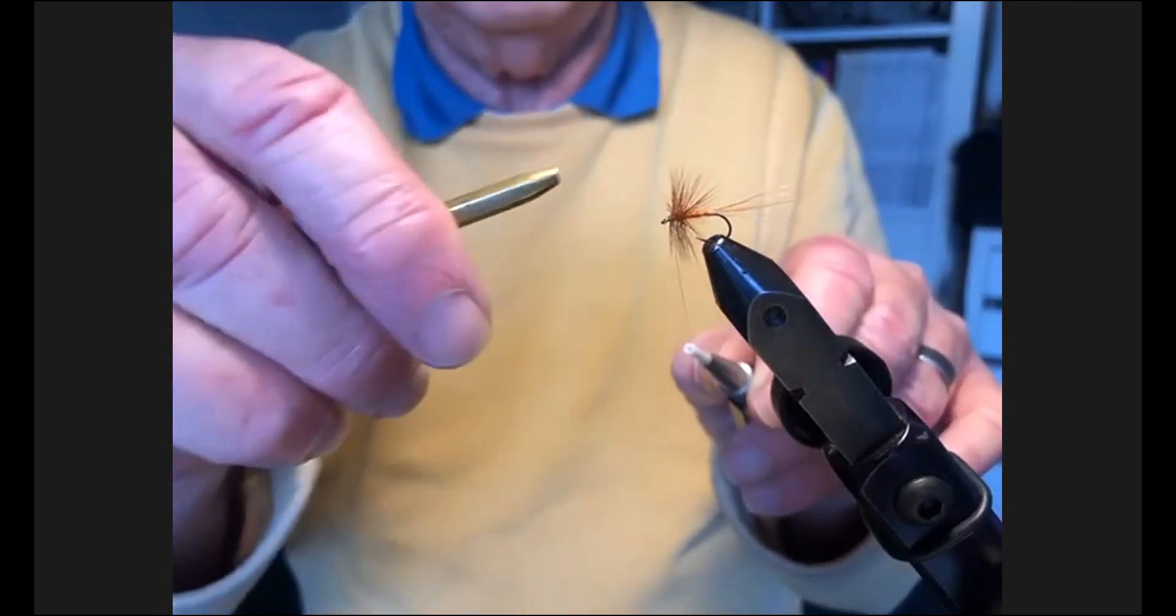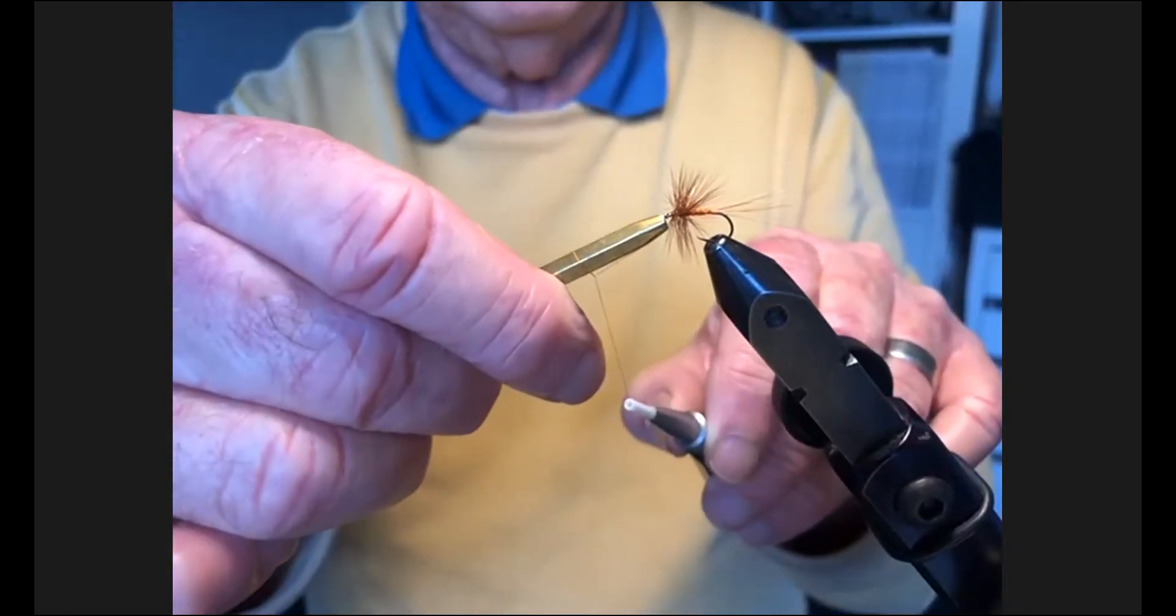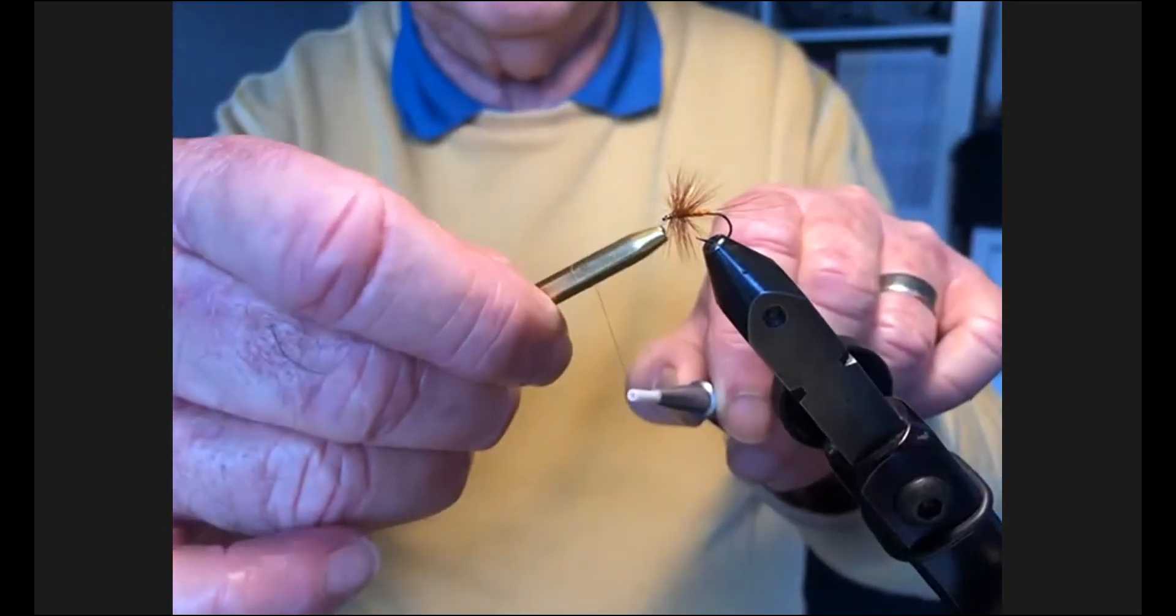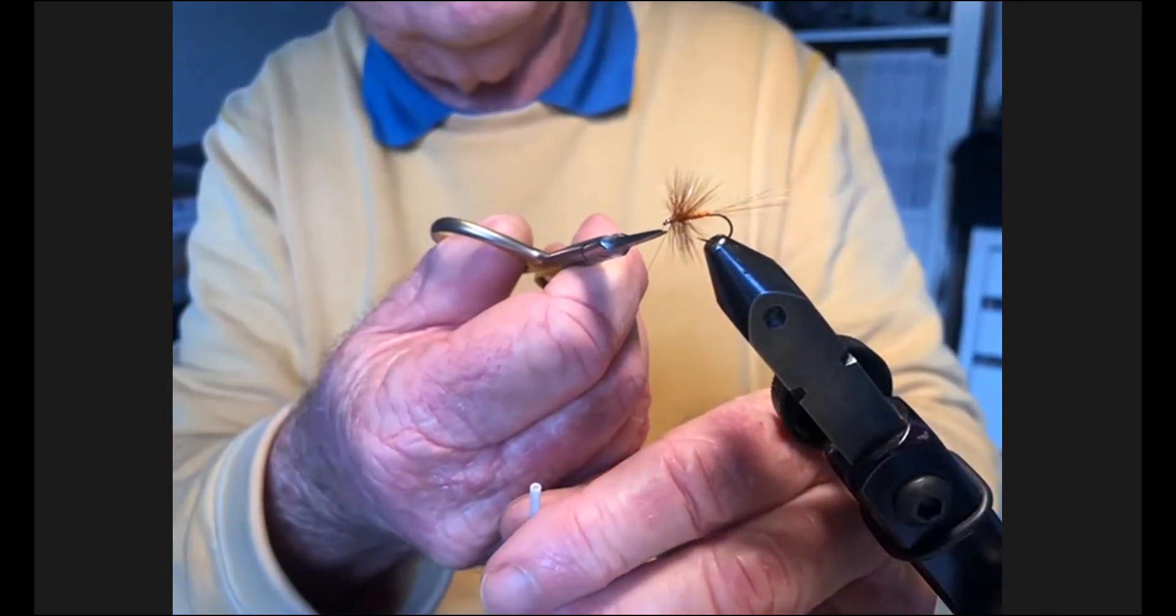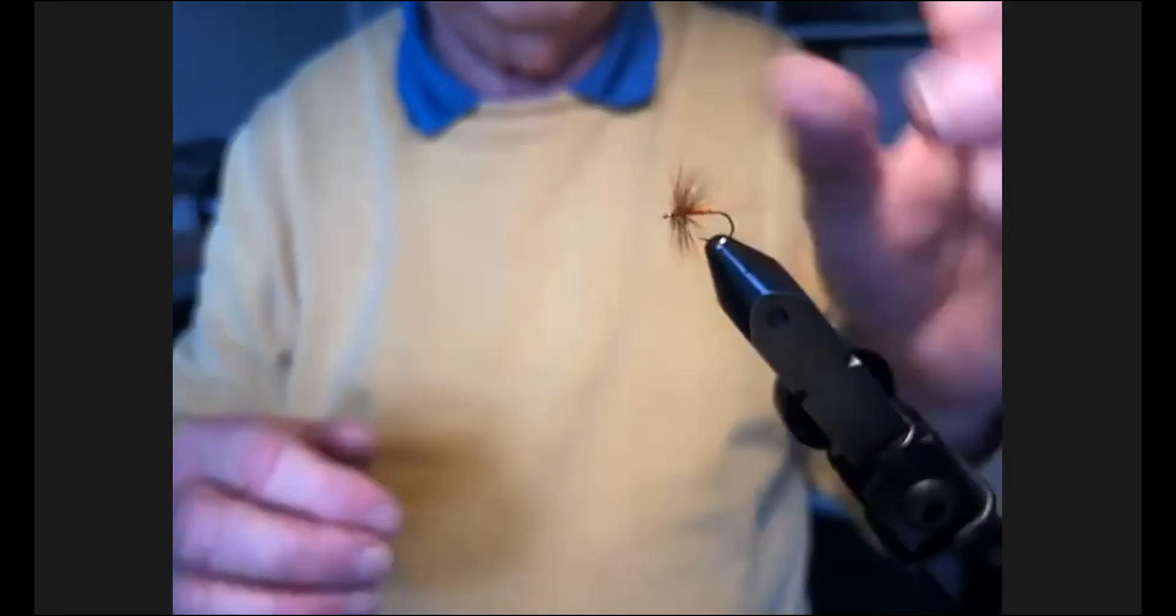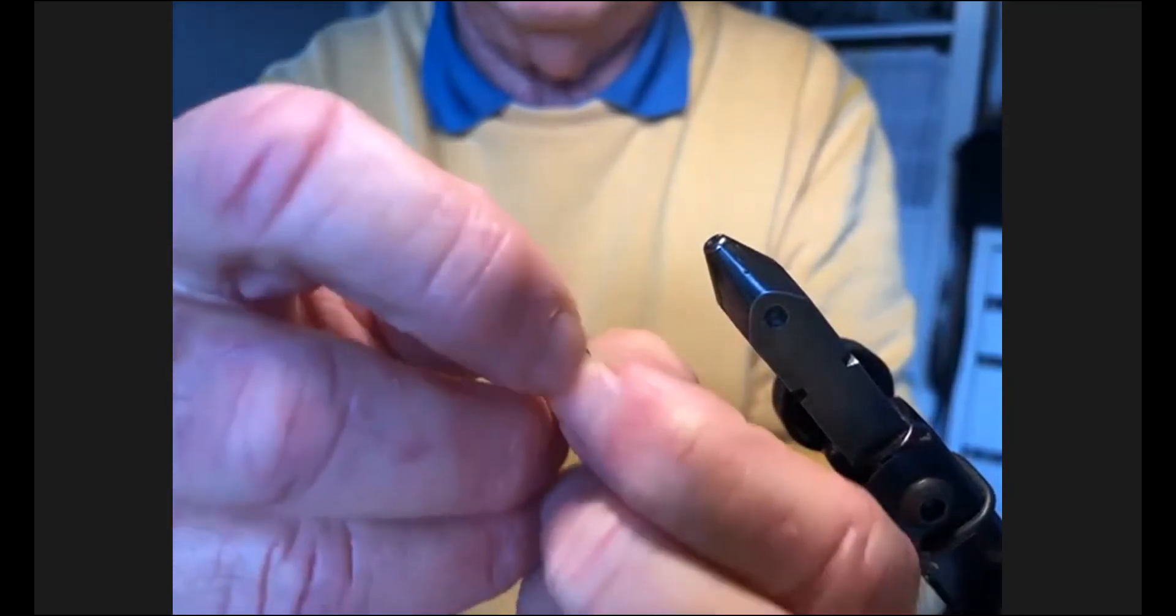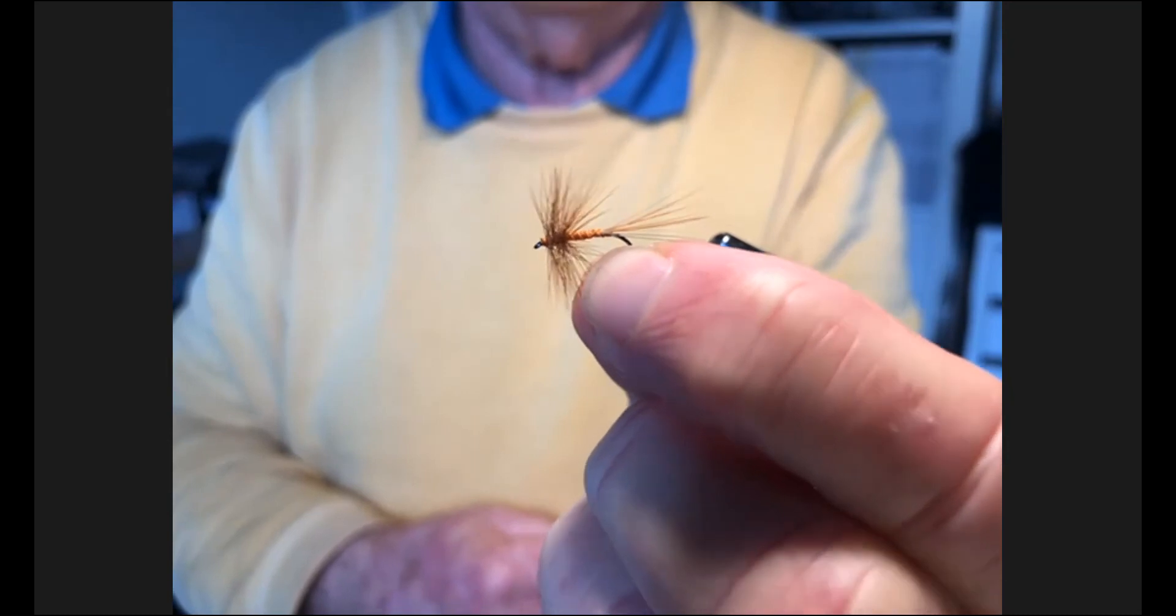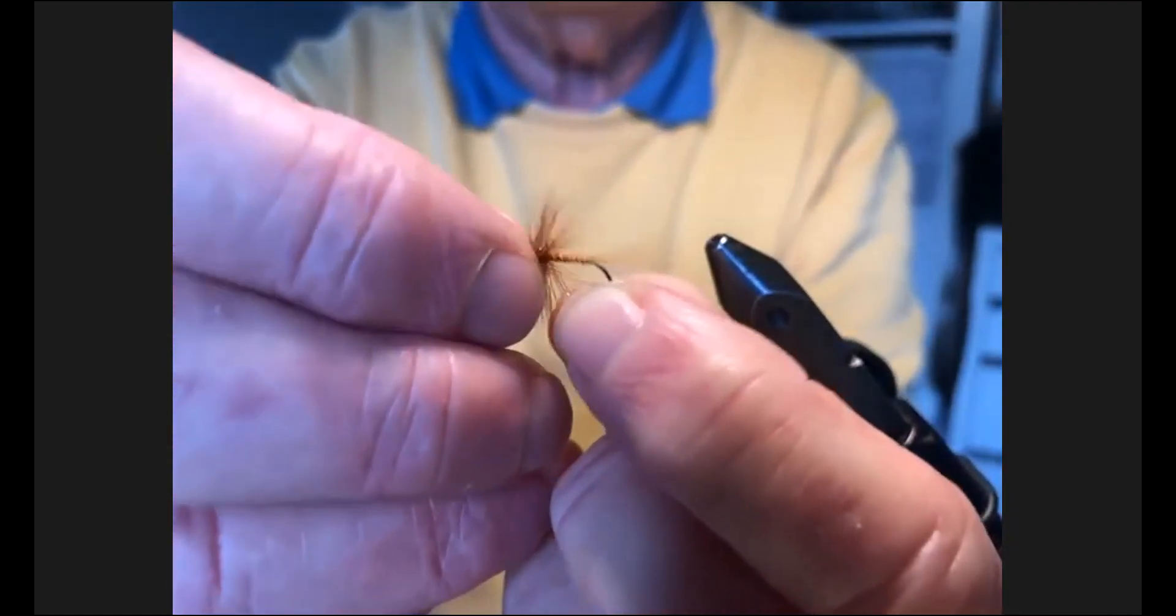Again, you're using that half hitch just to push that hackle back a little bit. It's very noticeable when you do it. You can see it's come back. If you're not competent at doing a whip finish, the half hitch is very good. And a bit of head cement then all locks it all in place. Now, just bring that fly in when you're ready. Just bring it in towards the camera just so we can see the segmentation. You can. Pretty subtle. You can see it. It's very subtle. Very subtle.